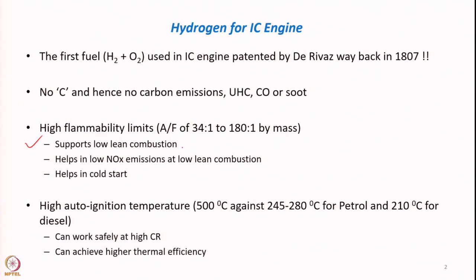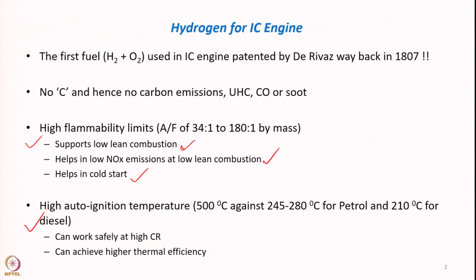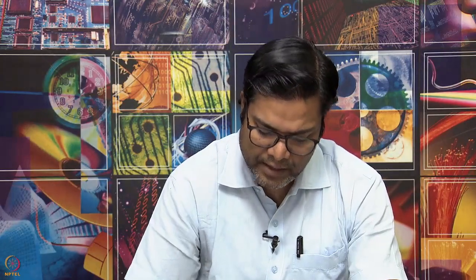One benefit of wide flammability limits is that it supports lean combustion, which helps in limiting NOx emission. It also helps in cold start. Another important property of hydrogen is its high auto-ignition temperature — almost around 500 degrees Celsius, against typically all hydrocarbons which are in the range of around 200 to 300 degrees Celsius. This means hydrogen will not auto-ignite under the conditions of a compression ignition engine, but positively it can safely work at higher compression ratios to achieve higher thermal efficiency.